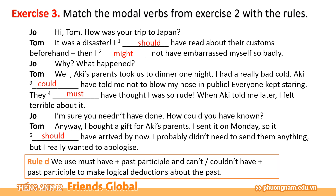Rule D: must have cùng với quá khứ phân từ, can't / could have / couldn't have cùng với quá khứ phân từ để đưa ra những suy diễn mang tính logic về quá khứ. Bởi vì chúng ta có một cái thông tin: everyone kept staring — mọi người cứ nhìn chầm chầm vào tôi hoài. Nên bạn mình đã có một cái suy diễn trong quá khứ dựa trên thông tin này: họ chắc chắn đã nghĩ rằng tôi rất là bất lịch sự — they must have thought I was so rude.